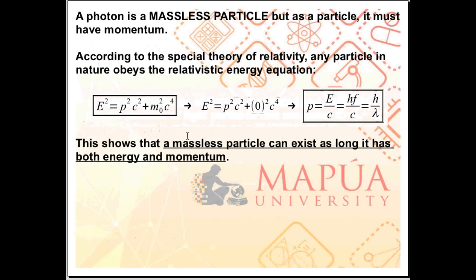A photon is a massless particle, seeing as a light wave does not have mass, at least wave in the classical sense. Light does not have mass, so any particle that comprises light must not have mass. As a photon is a massless particle, but as a particle, it must have momentum, a characteristic of particles.